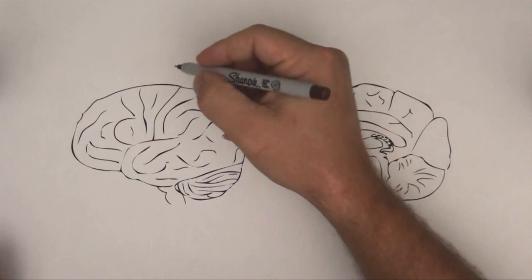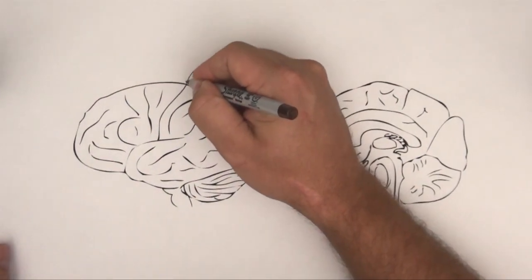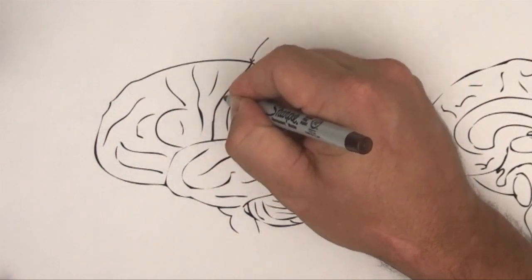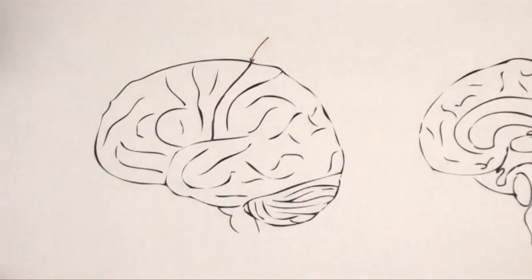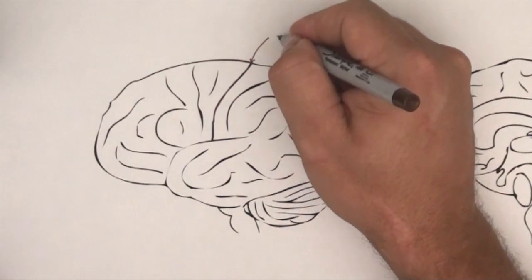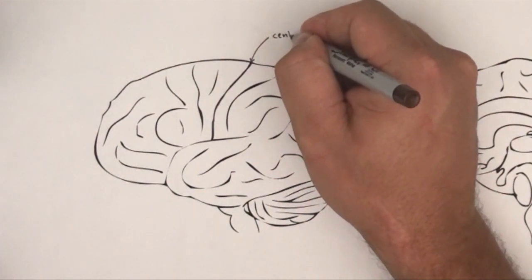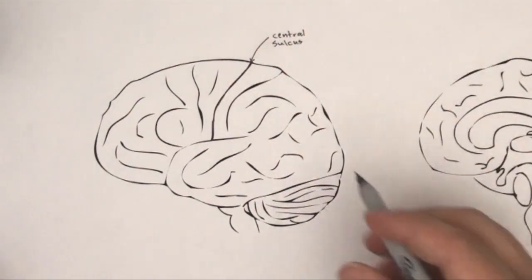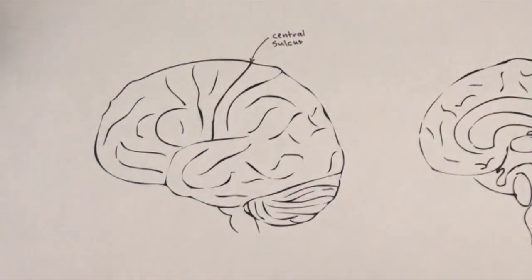I want to start right here with this whole sulcus. A sulcus is basically a valley in the brain, and this one's called the central sulcus. The reason I want to start with that one is because it divides up the frontal lobe from the parietal lobe.